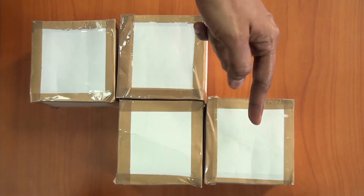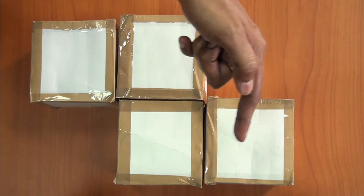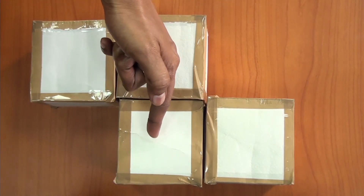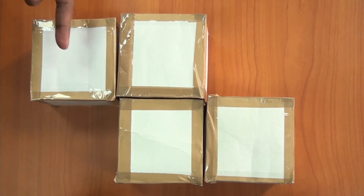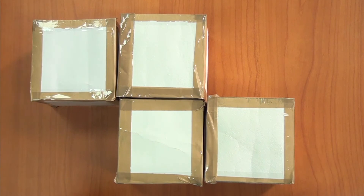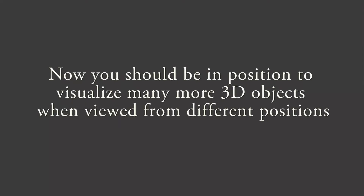Now to the top view. So when we look at the object from the top, what can you see? Yes, there are four squares. Now you should be in a position to visualize many more such 3D objects when viewed from different positions.